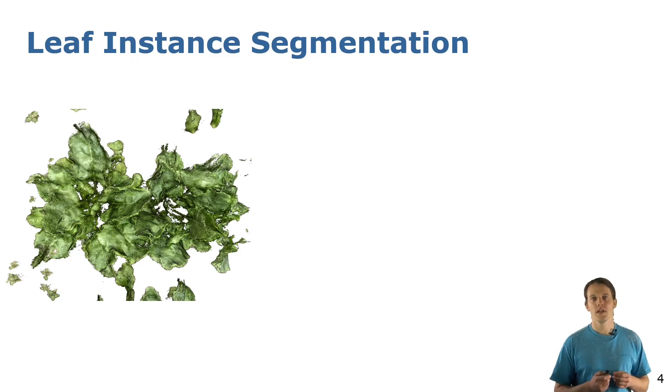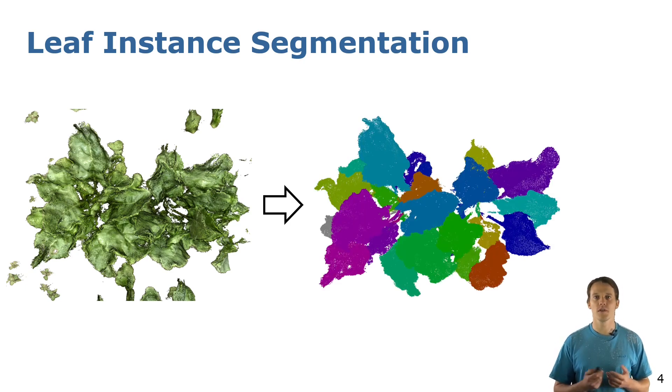Given an input point cloud like the one shown here on the left, we want to know which points are part of which leaf, which is color coded in the point cloud on the right. This is a well-studied problem in autonomous driving scenarios but it has not been investigated so much in agriculture yet.